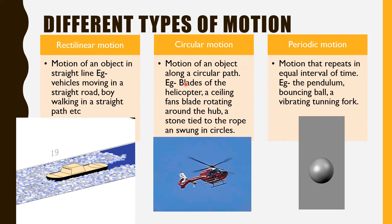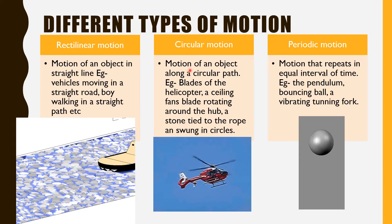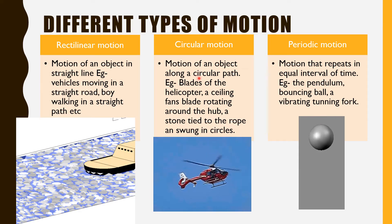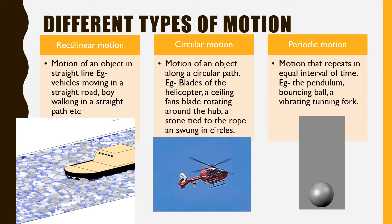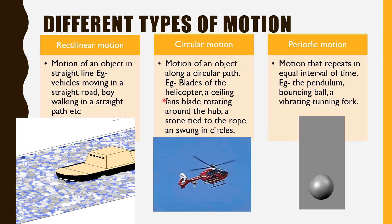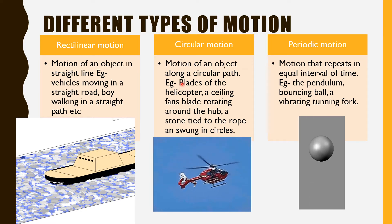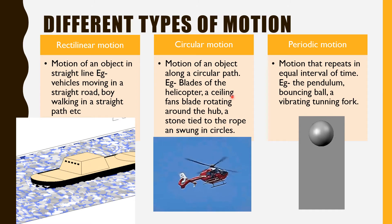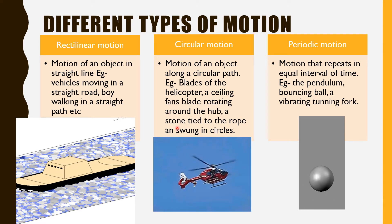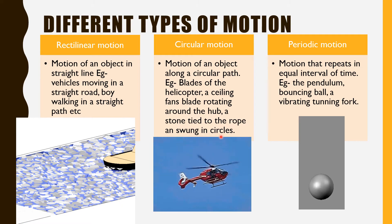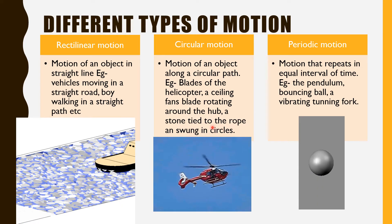Next is circular motion — the motion of an object along a circular path. For example, you can see the blades of a helicopter rotating in a circular path. Certain examples are: blades of a helicopter, a ceiling fan's blade rotating around the hub, or a stone tied to a rope and swung in a circle. These are all day-to-day examples.